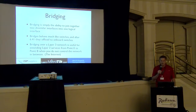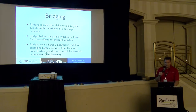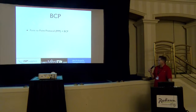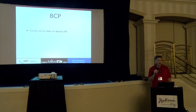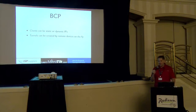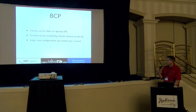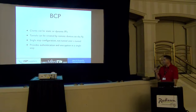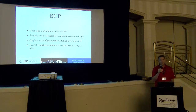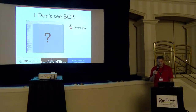Bridging over a Layer 3 network is useful anytime you want to extend Layer 2 services from one point to another, especially when you don't control the network in between, such as the internet. Bridge Control Protocol is specific to PPP. It lends itself well to hub-and-spoke network arrangements. Clients can have static or dynamic IP addresses — we don't need to know their IP addresses in advance. Tunnels can be created by remote devices on the fly and go away when the client goes away. It's a single-step configuration — not a tunnel over a tunnel — and provides both encryption like IPsec and authentication.